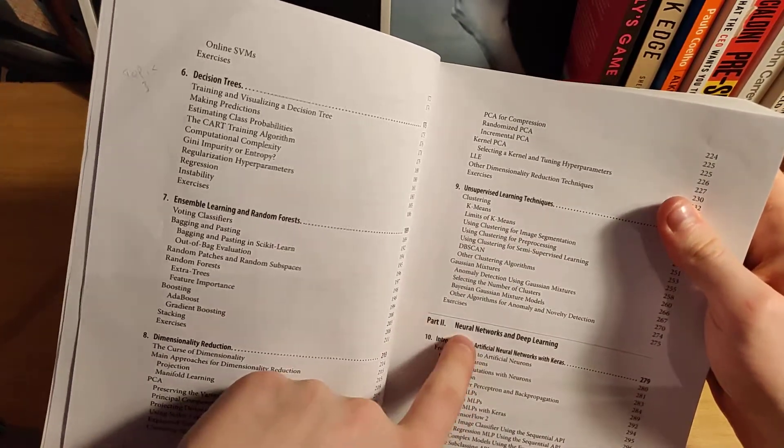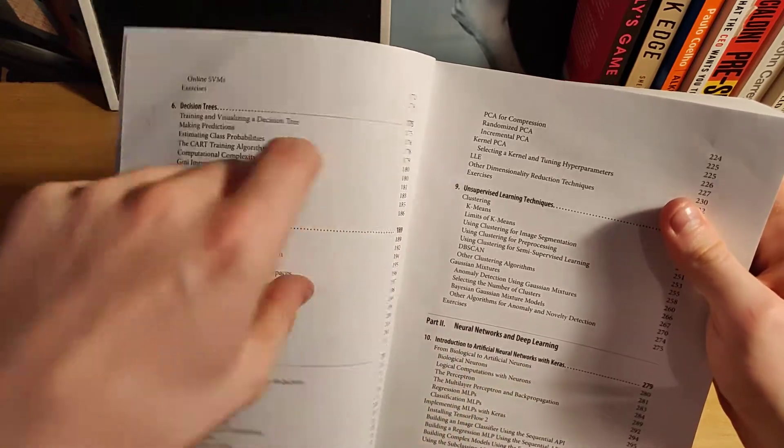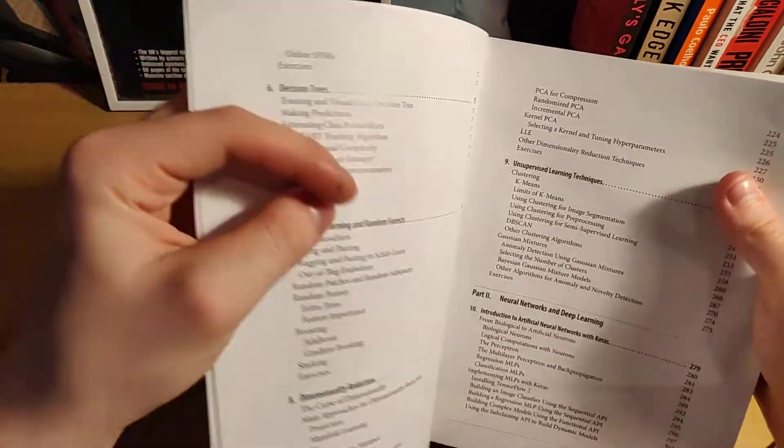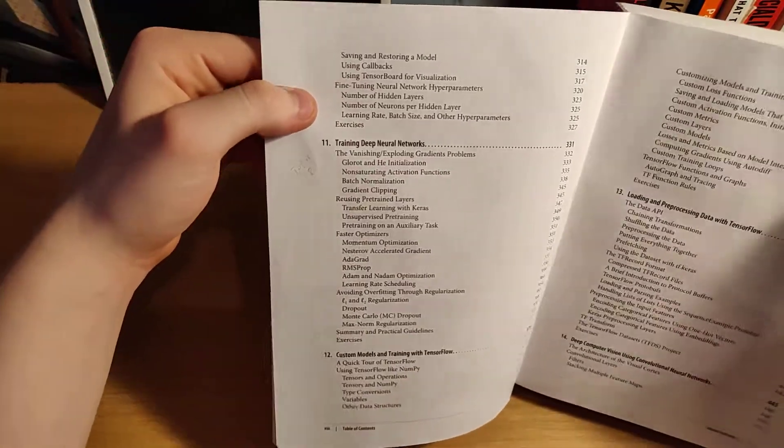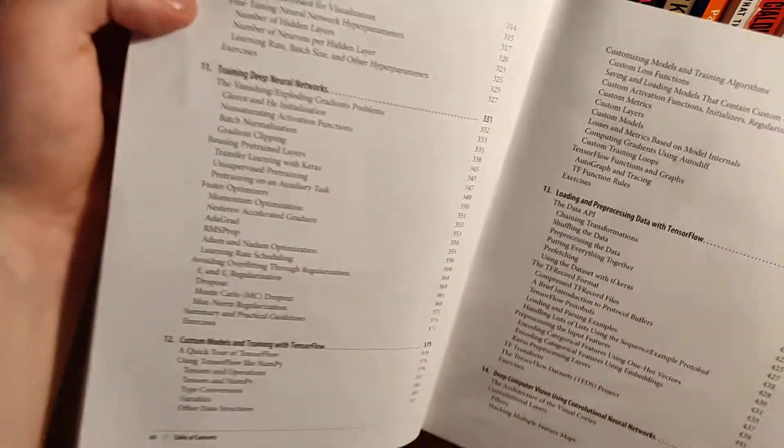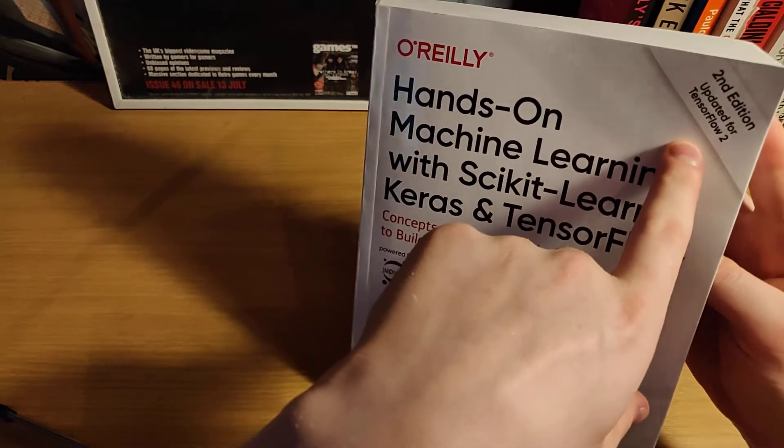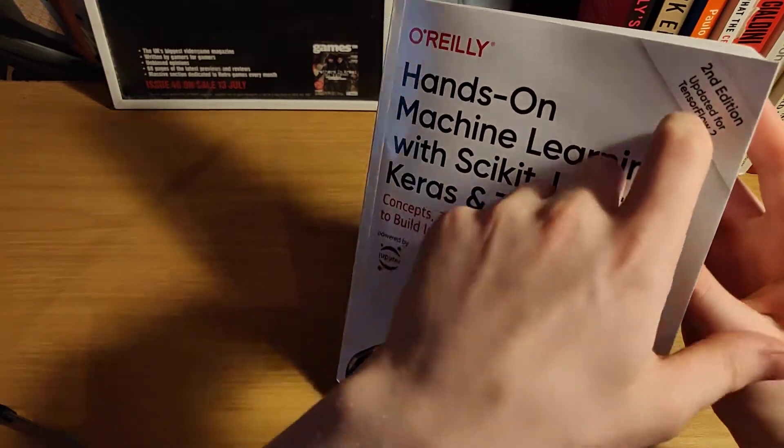And in part two, neural networks and deep learning. So it's an introduction to artificial neural networks with Keras, and then training deep neural networks, custom models and training with TensorFlow. So the second edition is using TensorFlow 2.